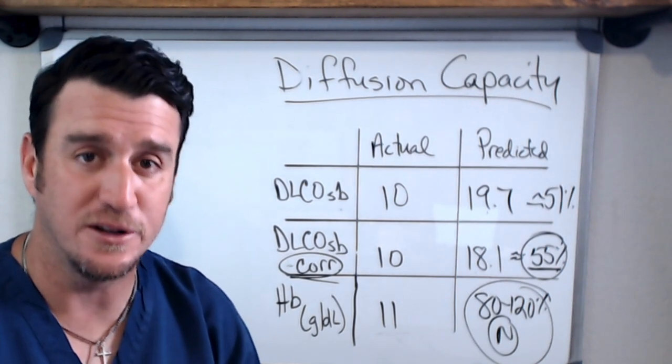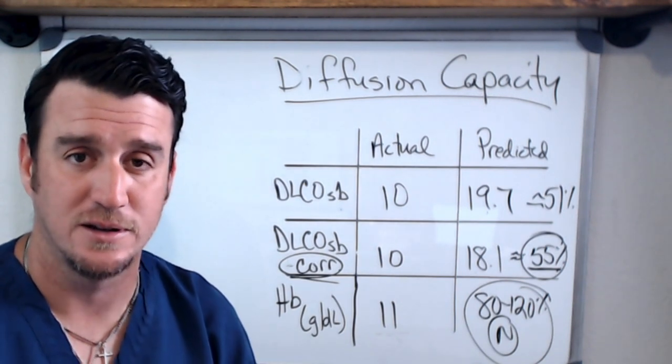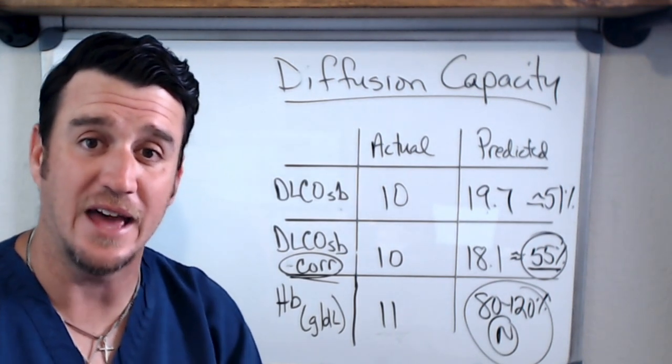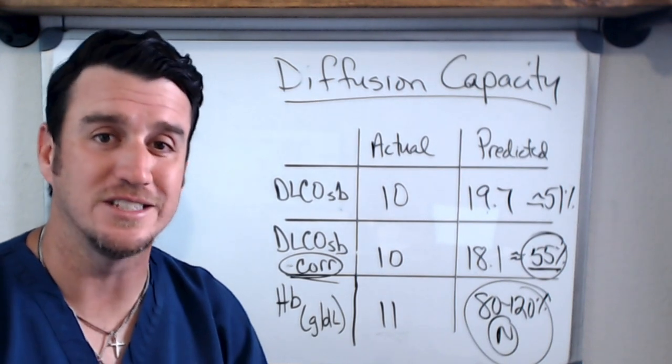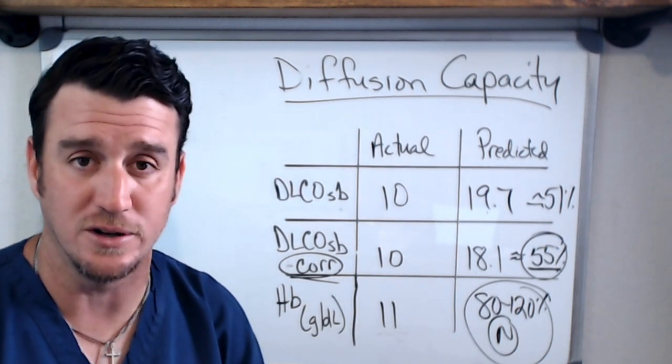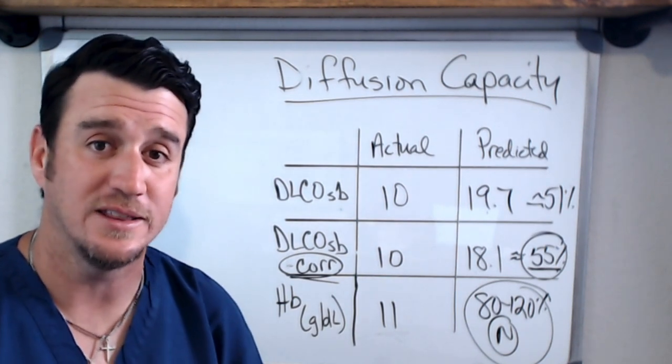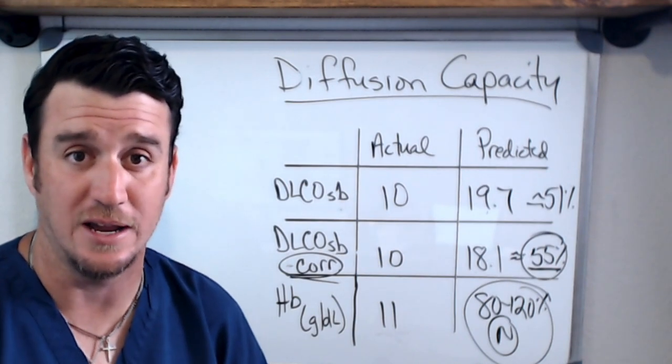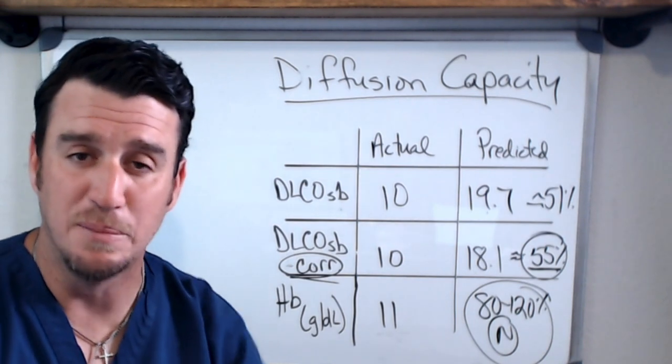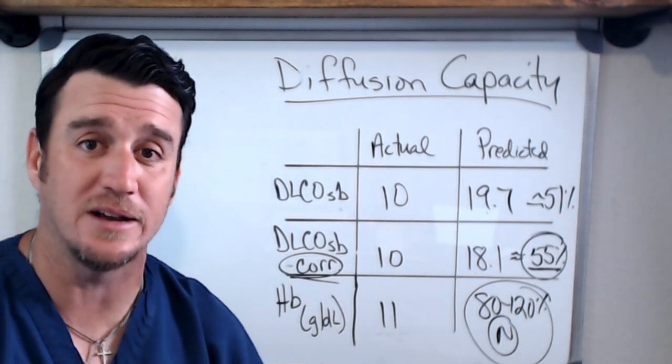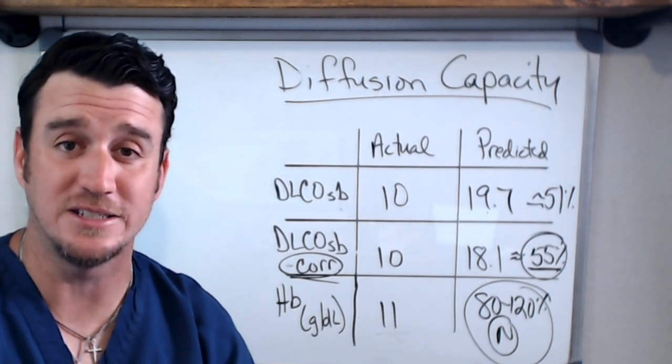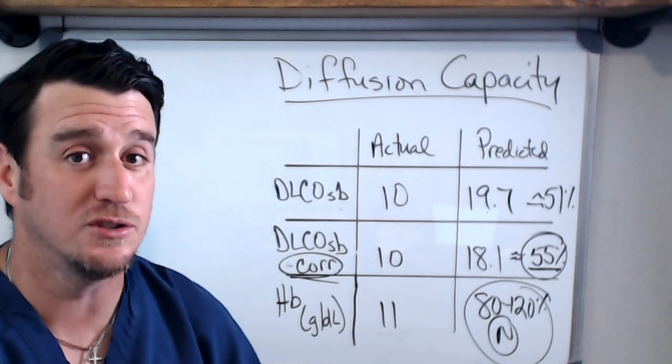...somewhere causing a diffusion defect. That's all it tells us. And that's the importance of this video, is understanding that DLCO does not give an indication to airflow obstruction or restriction to volume. It just tells you that you have a problem with gas exchange. Now when we tie this all back in together, this is all going to make sense. But for right now, this is what you need to know about diffusion capacity, the information I just gave you.